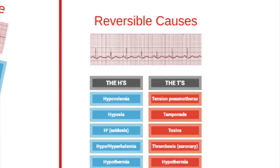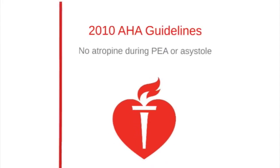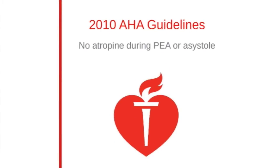Here are the reversible causes, which include the H's and the T's. This, like the rules, is also inside your manual. Although there is no evidence that atropine has a detrimental effect during bradycardia or asystolic cardiac arrest, routine use of atropine during PEA or asystole has not been shown to have a therapeutic benefit.